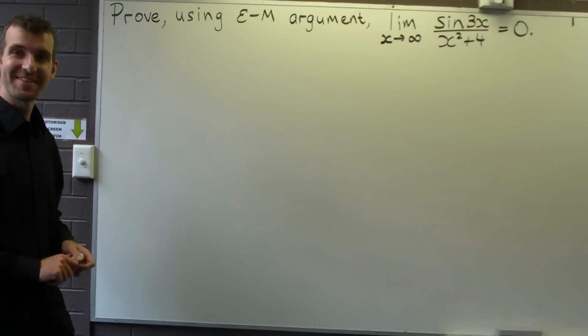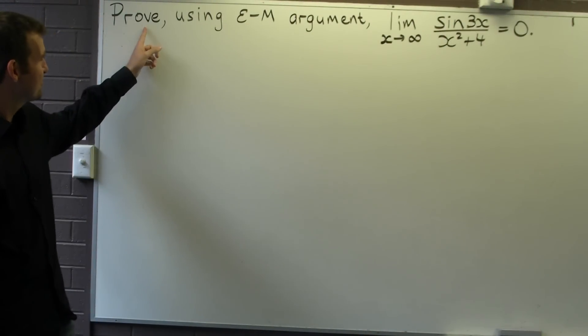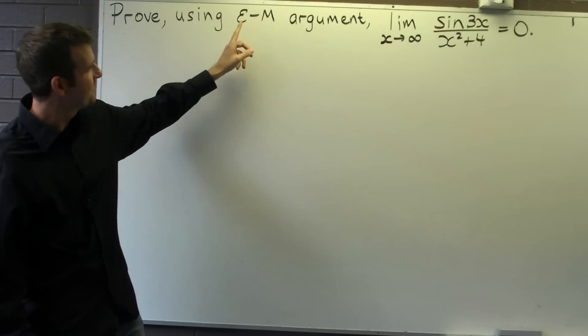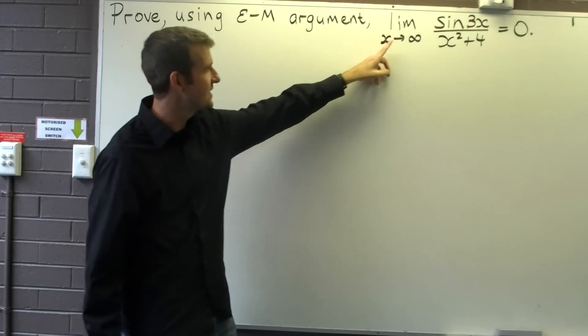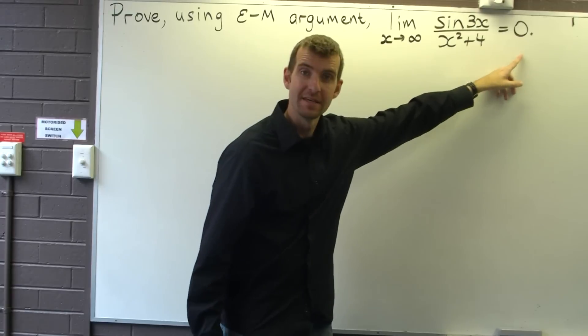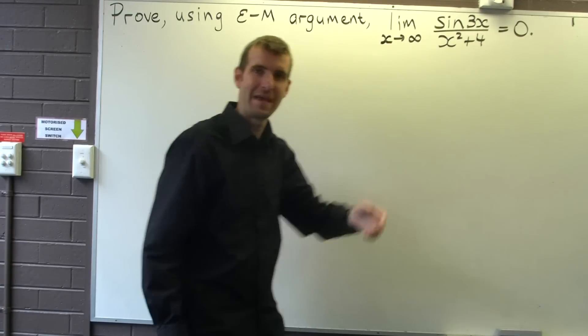So here we're faced with the following problem: we want to prove using the first principle epsilon-M type argument that the limit of this function equals zero. How do we do it?